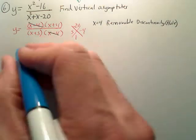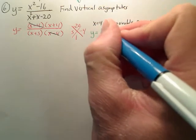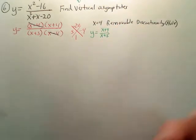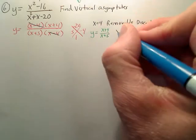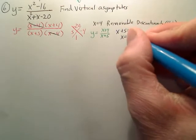Then you have a new equation: y equals (x + 4) over (x + 5). I set the bottom equal to zero, and when I do that, I get x equals negative 5.